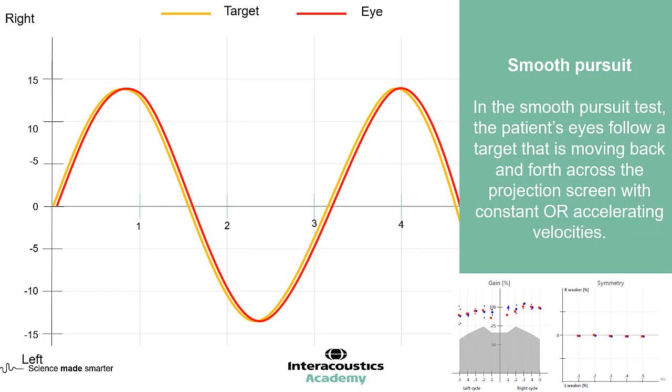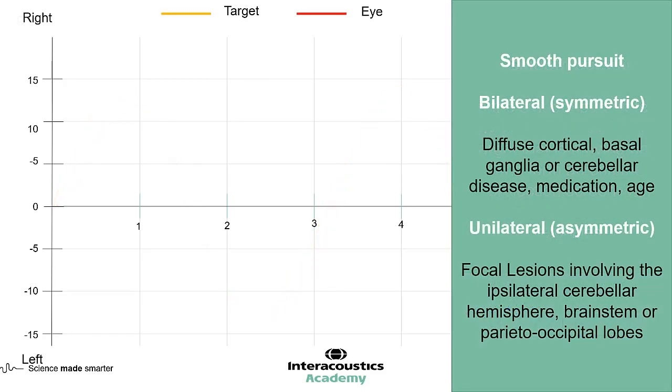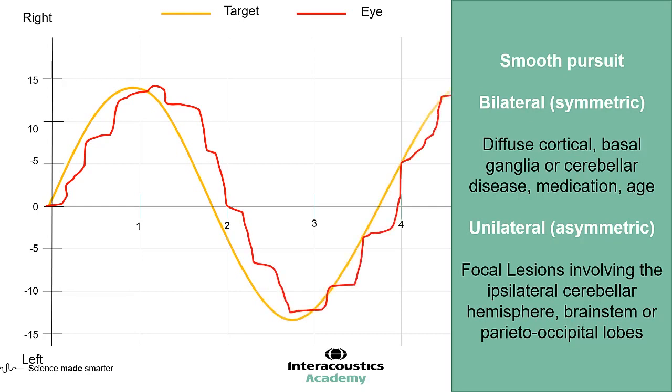Here is an example of a bilateral symmetric abnormality. What we can see is we've got correction being applied both to the right and to the left directions to keep the eye tracking with the trace.